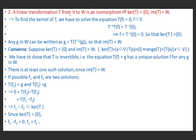Next we show: a linear transformation T from V to W is an isomorphism if and only if ker(T) = {0} and im(T) = W. First we assume T is an isomorphism and show ker(T) = {0} and im(T) = W. In the second part we assume ker(T) = {0} and im(T) = W and show T is an isomorphism.